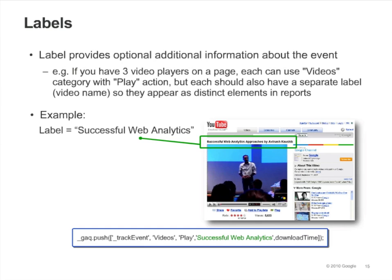The label argument is optional. A label allows you to provide additional information for the event you are tracking. For example, if you are tracking video plays, you might use the label argument to specify the name of the movie that was played. Or for file downloads, you might use it for the name of the file being downloaded. The labels report in the event tracking section will show you the labels of the events that occurred.